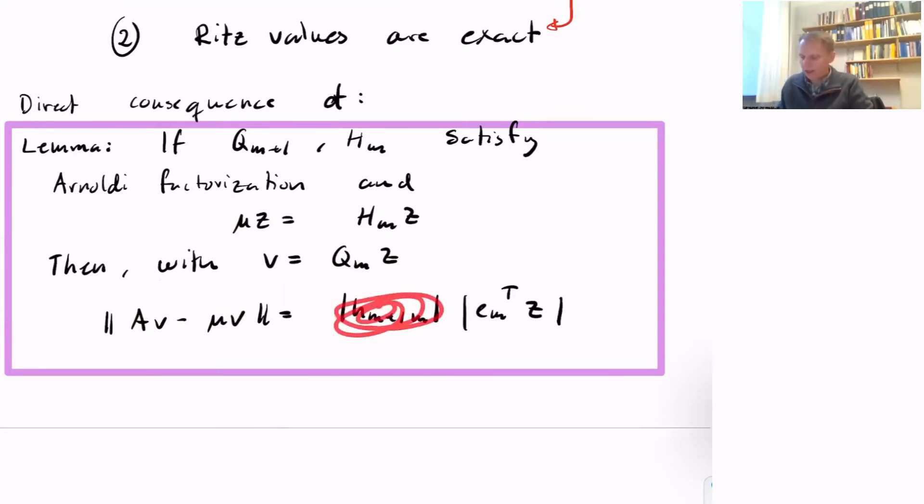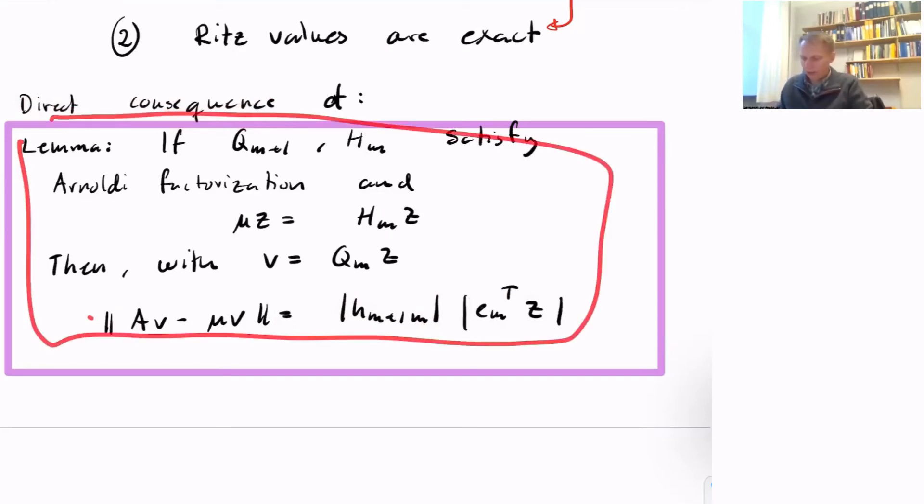Note here that H_M+1,M is the last element of the Hessenberg matrix. This means that if the last element of the Hessenberg matrix is zero, we get that the right-hand side is zero, so the left-hand side is zero. So we have zero residual, which means we have an exact eigenvector. The equivalence above is a direct consequence of this lemma. If we have breakdown, the residual is zero.